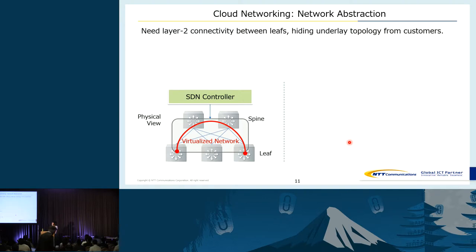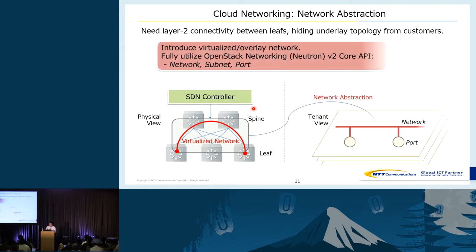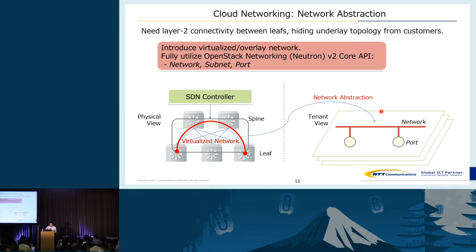So I will begin describing our approaches. The most fundamental functionality is providing layer 2 connectivity between leaves and also virtual routers. But we don't want to expose the underlay topology to customers — this is the same approach as Neutron does. We introduce a virtualized overlay network and fully utilize the network abstraction which Neutron provides. Specifically, we apply the same idea of Neutron using network, subnet, and port resources to customers, so users only need to think about their own tenant network topology.